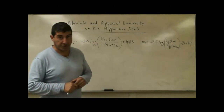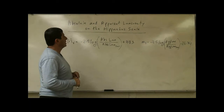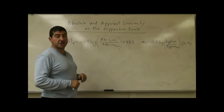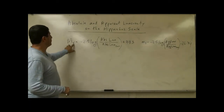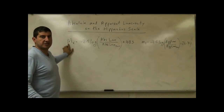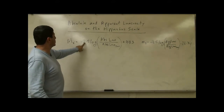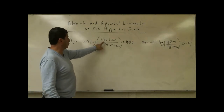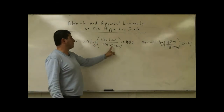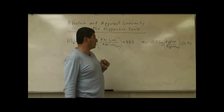Now we're going to talk about the Hipparchus scale — the absolute and apparent luminosity of stars on the Hipparchus scale. This is called MV, the absolute visual magnitude. Its equation is negative 2.5 times log of the absolute luminosity of a star over the absolute luminosity of the sun, plus 4.83.